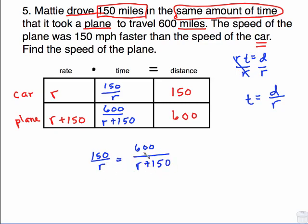Finally, we have something we can solve. It's a cross product because it's a fraction equal to a fraction, meaning this is a proportion. Multiply here gives us 600 R. Multiply here, and remember this is going to be a distributive situation, is me 150 R. 150 times 150 is 225 with two zeros on it.